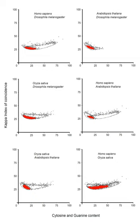When referring to a promoter, some authors actually mean promoter plus operator; for example, the LAC promoter is described as IPTG-inducible, meaning that besides the LAC promoter, the LAC operator is also present. If the LAC operator were not present, IPTG would not have an inducible effect. Another example is the TAC promoter system — TAC is written as a TAC promoter, while in fact TAC is actually both a promoter and an operator.